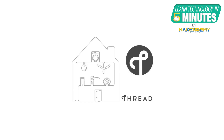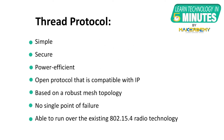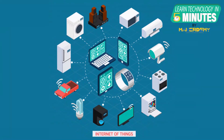Now let us understand the features of the Thread protocol that make it the best suited protocol for home automation networks. As stated by the Thread Group, the protocol was designed to be simple for customers to use, always secure, power efficient, an open protocol that is compatible with IP, based on a robust mesh topology with no single point of failure, and able to run over the existing 802.15.4 radio technology. Thread was designed to support a wide variety of applications in the home, such as appliances, climate and access control, lighting and energy management, and safety and security.